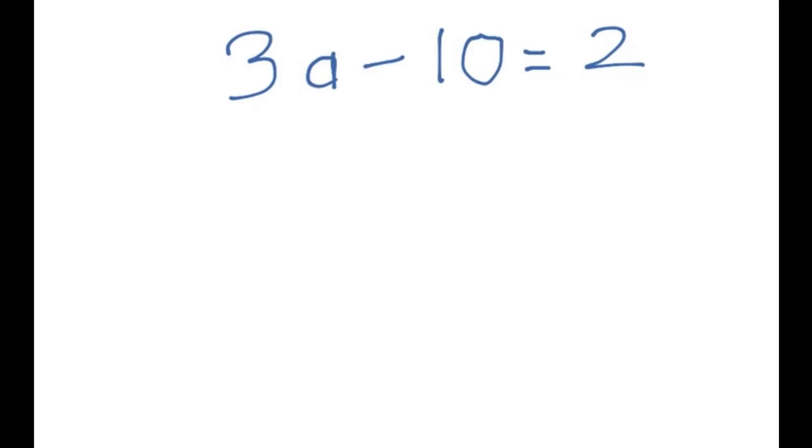Here's another one. This time we do a similar thing. We leave the 3a on the left and we move the minus 10 to the right hand side. So we end up with 2 plus 10. Remember again, I've changed the sign from a minus 10 to a plus 10.